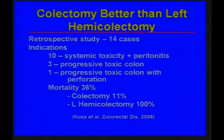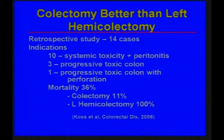This is a very small series of only 14 patients, but it's compelling. They looked at what was the difference between patients who had a left hemicolectomy for C. diff because the right colon looked fine versus those who had a total colectomy. It's a retrospective series — patients were having surgery for toxicity, peritonitis, perforation, or toxic colon. Overall mortality was about 36%. But the patients who had their entire colon out had only 11% mortality, versus those in whom the surgeon elected to leave the right colon in, where all of them died. So if the patient is having surgery, it probably makes sense to take their whole colon out.